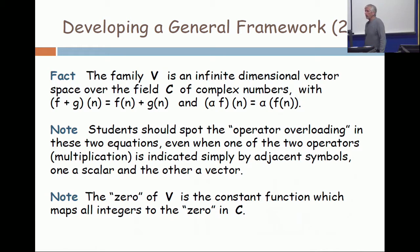What I just described is an infinite dimensional vector space, because if you have two functions which map Z to C, integers to complex numbers, I can talk about the sum of two functions, and I can also talk about a scalar multiple of a complex number times a function. So look at that line. There's two equations there.